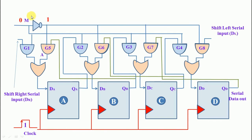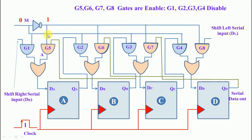Next we select control signal value 0. At that time the output of the NOT gate becomes 1. This 1 is directly connected to G5, G6, G7, and G8, so G5, G6, G7, and G8 are enabled, while G1, G2, G3, and G4 are disabled.